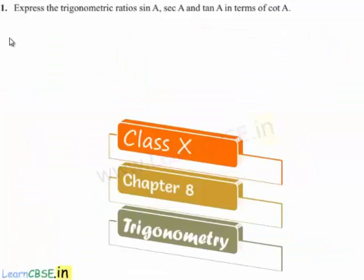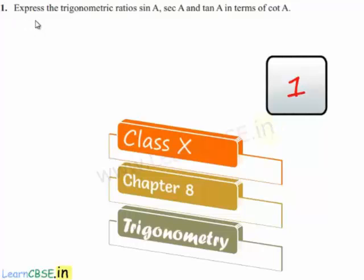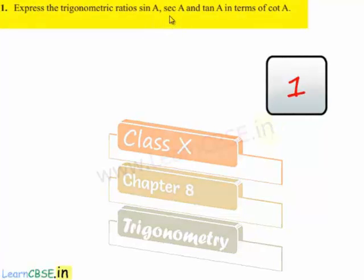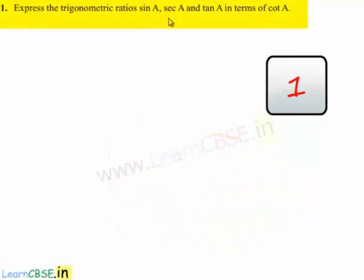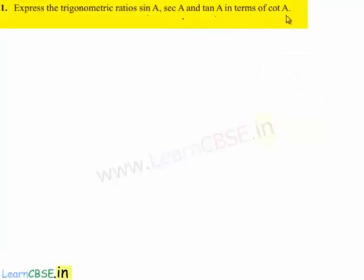Moving on to the first question: express trigonometric ratios sine a, secant a, and tan a in terms of cot a. Now moving on to the solution.